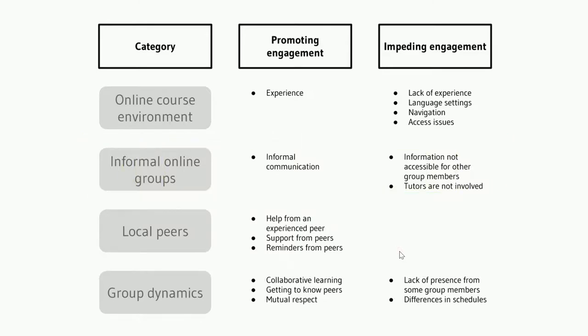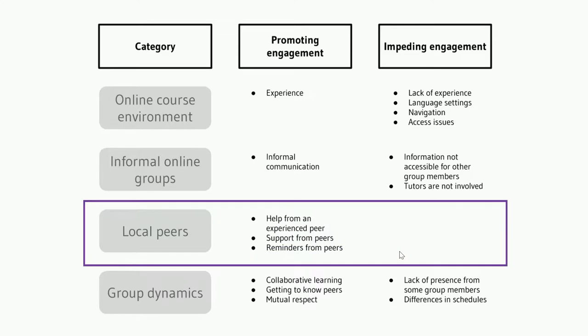When it comes to support from co-located peers, the interview demonstrates that it was crucial. Although the facilitator and the online tutor were pretty much always available, students preferred to ask local peers for help. First of all, they relied on the knowledge and help of a more knowledgeable and experienced peer, who had the ability to offer guidance, especially in terms of the technology and software used in the course. The more experienced peers' help was crucial, as students did not have the opportunity to receive direct instruction otherwise.